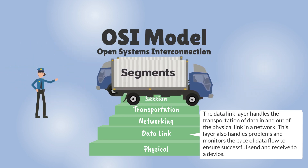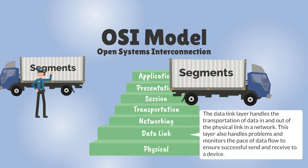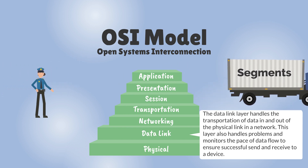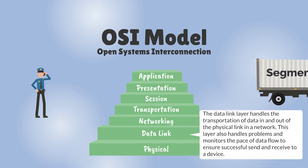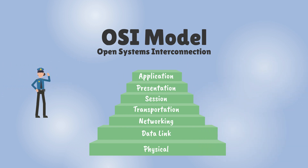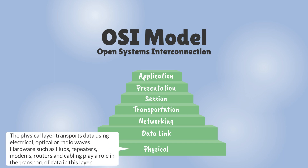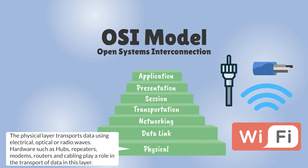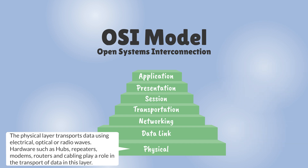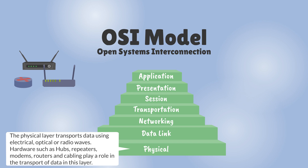The data link layer also handles problems and monitors the pace of data flow to ensure successful sending and receiving to a device. The physical layer transports data using electrical, optical, or radio waves. Hardware such as hubs, repeaters, modems, routers, and cabling play a role in the transport of data in this layer.